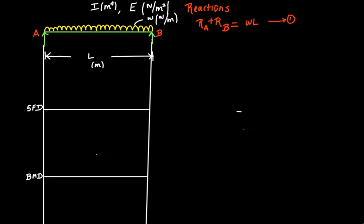Now there are two unknowns in this equation, RA and RB. If there are two unknowns, we need two equations to solve them. For equilibrium, the moment of all the forces about point A can be equated to zero. In fact, you can take the moment of all forces about point B, the midpoint, or even a point outside the beam. If the moment is not equal to zero about any point, the beam is going to rotate about that point with respect to an axis protruding from the plane.